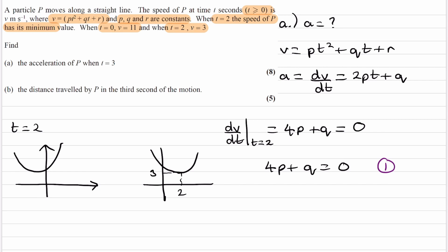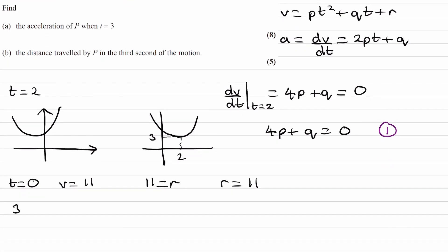When t equals zero, v equals 11. Substituting into pt squared plus qt plus r: the first two terms are zero, so v equals r, meaning r equals 11. Then using t equals two and v equals three: substituting gives 4p plus 2q plus r equals three. Since r is 11, this becomes 4p plus 2q equals negative eight. That's equation two.